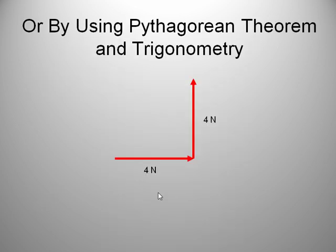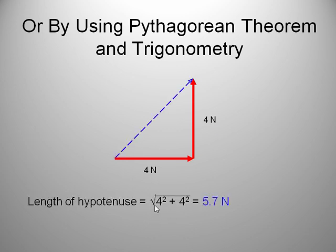Okay, so we could use Pythagorean theorem also. Here's our 4 this way and 4 up. We do the hypotenuse, right? Square root of sum of the squares gives us 5.7. And we could take the tangent of this angle is 1, right? It's opposite over adjacent. So we take the inverse tangent of 1, we get 45 degrees. Make sure your calculator is in degree mode.